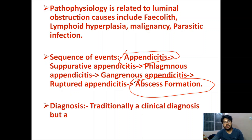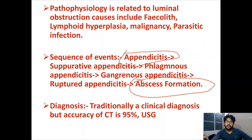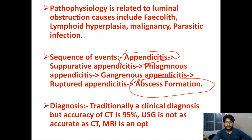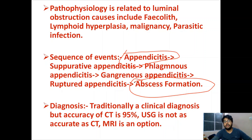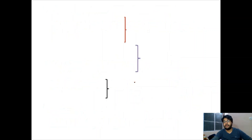Traditionally, appendicitis was considered a clinical diagnosis, but the accuracy of CT is 95%. Ultrasound is not as accurate as CT, and MRI is an option in patients where there is a contraindication to CT.